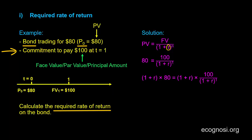What we do on one side of the equation, we also do on the other. So these 1 plus R cancel out, and we are left with 1 plus R times 80 equals 100.